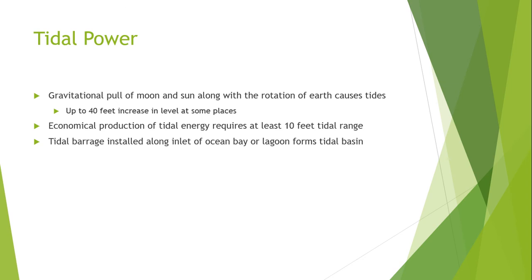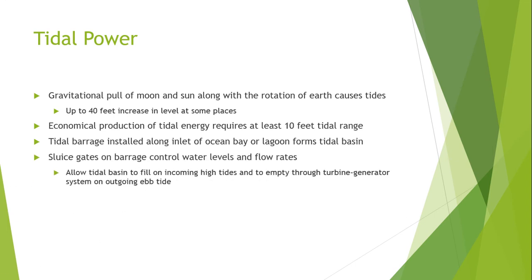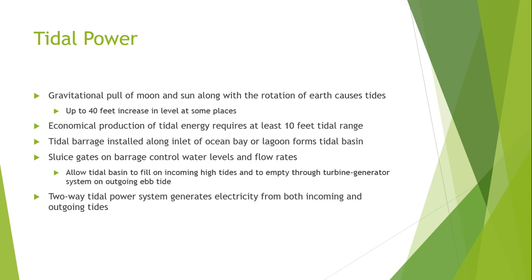A tidal barrage installed along the inlet of an ocean bay or lagoon forms a tidal basin. Sluice gates on the barrage control the water levels and flow rates. Using these gates we can control the filling of the basin, allowing it to fill from incoming high tides and emptying it through turbine generators. A two-way tidal power system generates electricity from both the incoming and outgoing tides.